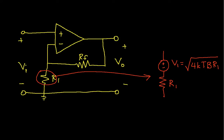Where K is Boltzmann's constant, T is the temperature in degrees Kelvin, and B is the system bandwidth in Hertz.